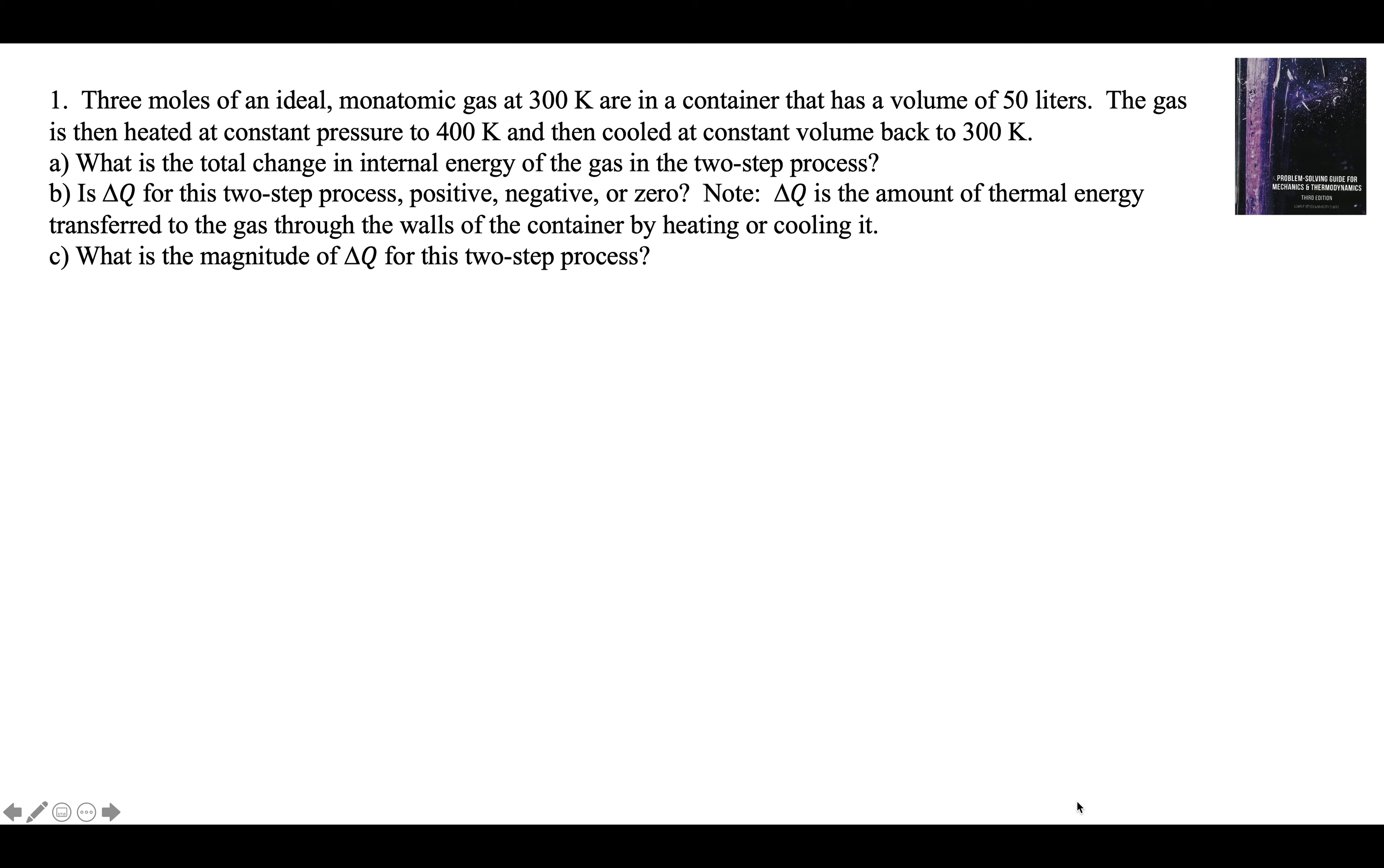We have 3 moles of an ideal monatomic gas at 300 kelvins in a container of volume 50 liters. The gas is then heated to 400 kelvins at constant pressure and then cooled back to 300 kelvins at constant volume. Part A asks for the total change in internal energy to gas in the two-step process.